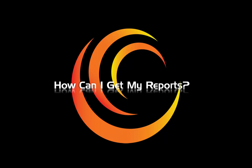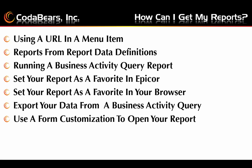This is not intended to be all inclusive. On this slide we show a number of different ways you can access your reports and your data in EPICOR 10.1. We'll go through some information about each point on the following slides. One of the ways you can get your reports out is using a URL in a menu item. You can also get reports using report data definitions in EPICOR, or run a business activity query report. You can set up any of those options as a favorite in your EPICOR software.